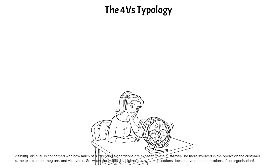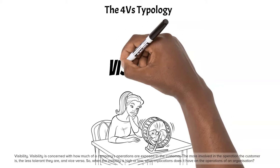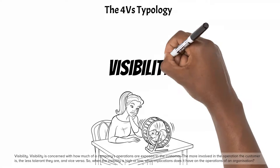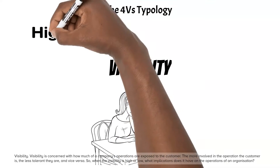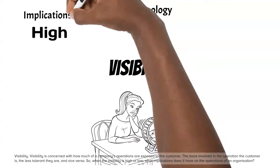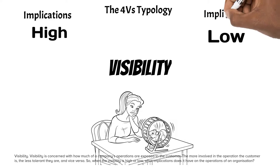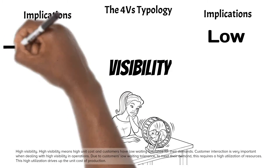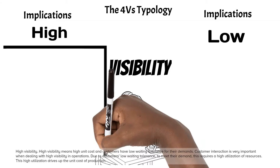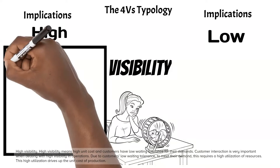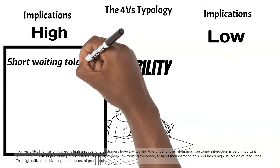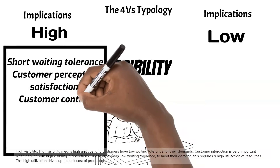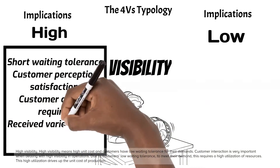Visibility is concerned with how much of a company's operations are exposed to the customer. The more involved in the operation the customer is, the less tolerant they are, and vice versa. High visibility means high unit cost and customers have low waiting tolerance for their demands. Customer interaction is very important when dealing with high visibility in operations. Due to customers' low waiting tolerance, meeting their demand requires a high utilization of resources, which drives up the unit cost of production.